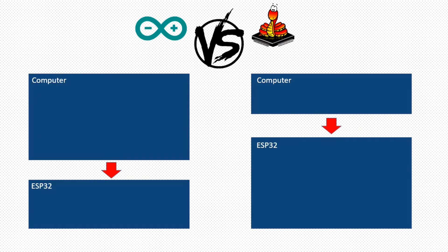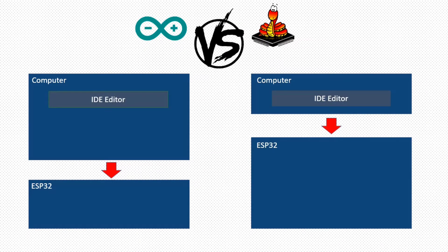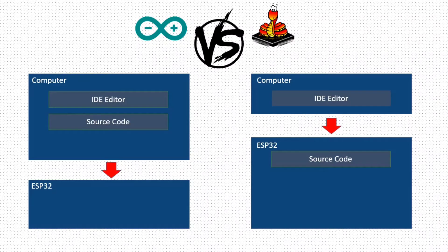In MicroPython, the source code is created or edited in the computer using an editor like Thonny Python, which is the same as in the traditional Arduino programming workflow using the Arduino IDE. In MicroPython, the code is stored inside the microcontroller's flash memory, while in Arduino, the code is stored in your computer.